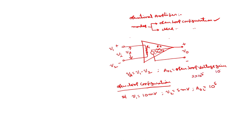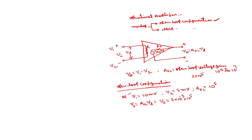Normally the open loop gain varies from 10 to the power of 4 to 10 to the power of 7. So what will be the output voltage V0? V0 equals Aol times Vd, neglecting the drop across R0. Substituting the values: Vd is V1 minus V2, which is 5 millivolts, times 10 to the power of 5. Theoretically the output would be 500 volts, but 500 volts is not possible.